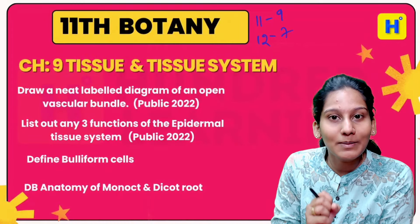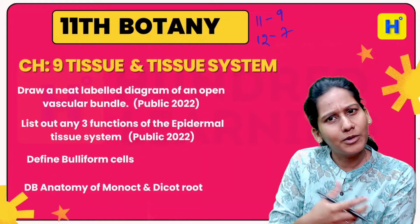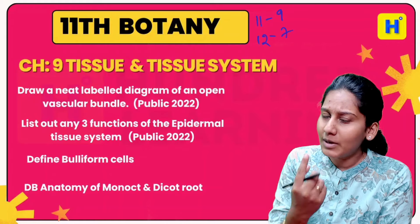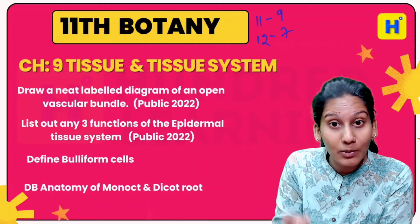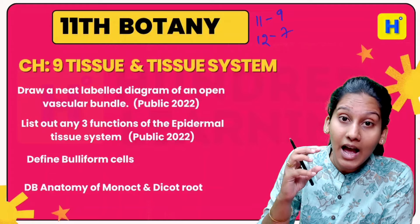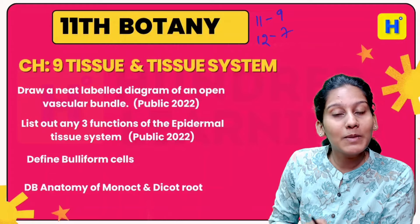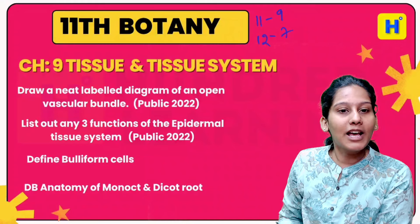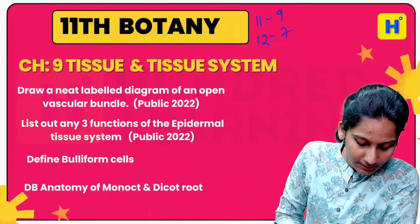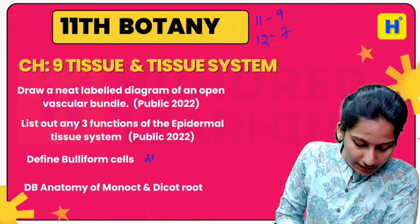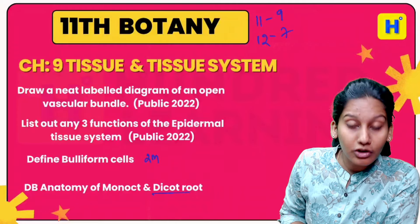So, Tissue and Tissue System — 11th Standard. This is a very interesting chapter. I will ask you questions from inside the book and also from public examples. If you mark it, we will ask about bulliform cells, and also about the difference between monocot and dicot root.